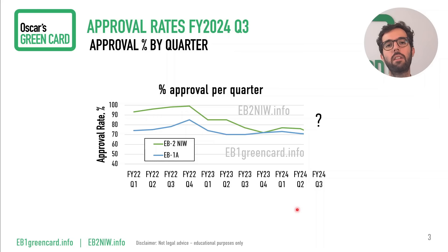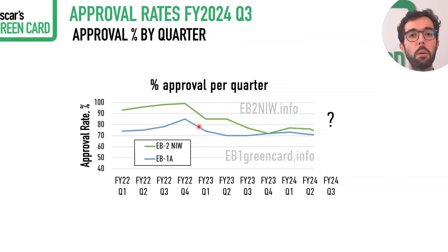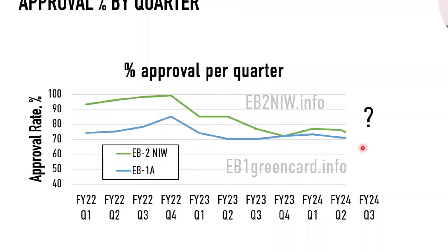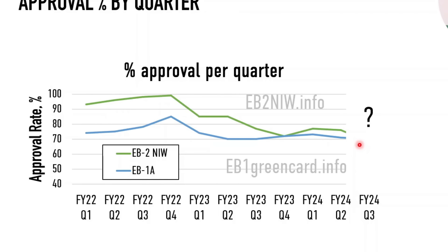Let's start taking a look at the data. First, percentage approval by quarter — that's what we have in this graph. In green we have EB2NIW and in blue we have EB1A. What we have been seeing is that generally the approval rate for EB2NIW has been higher than for EB1A, which makes sense because EB2NIW is supposedly an easier category than EB1A.